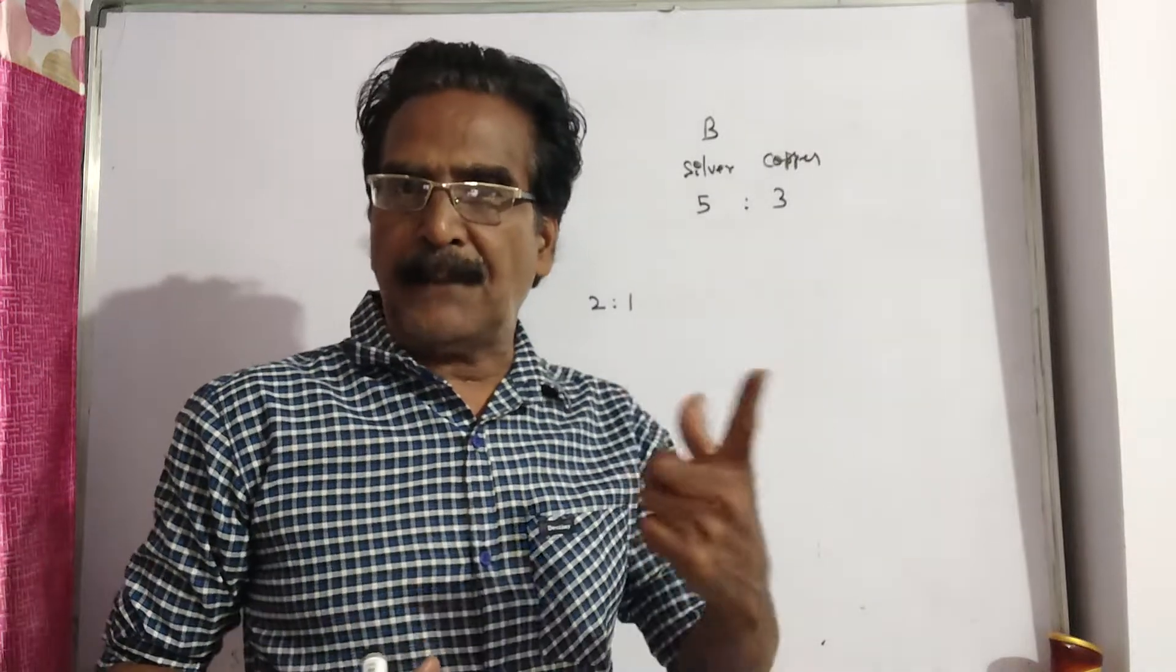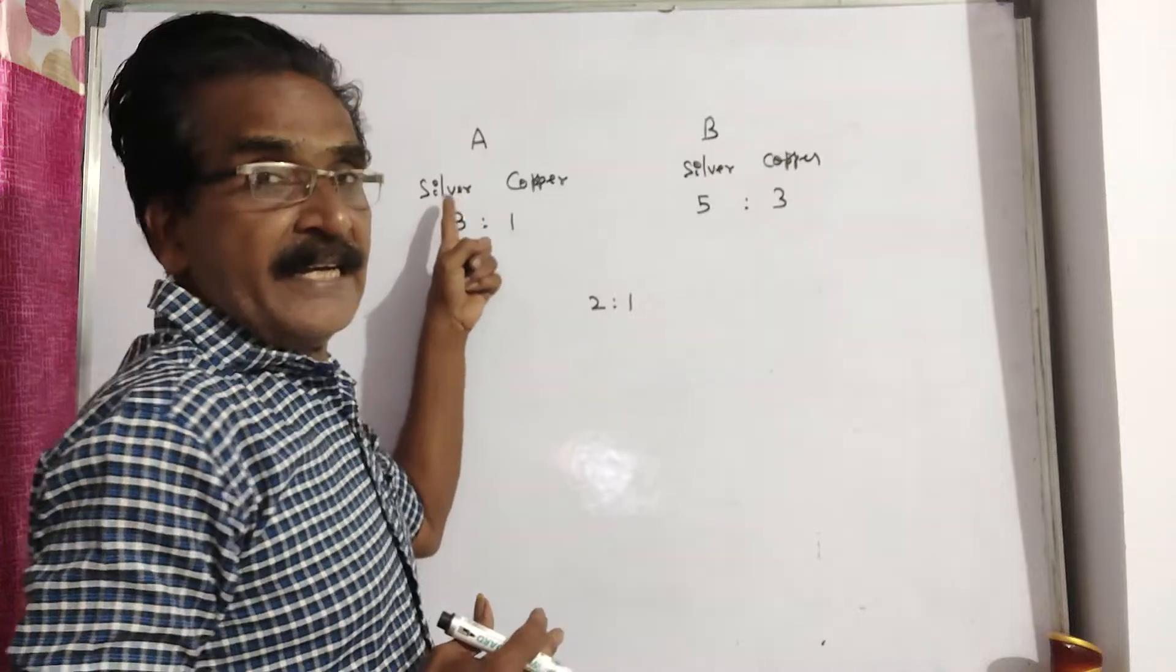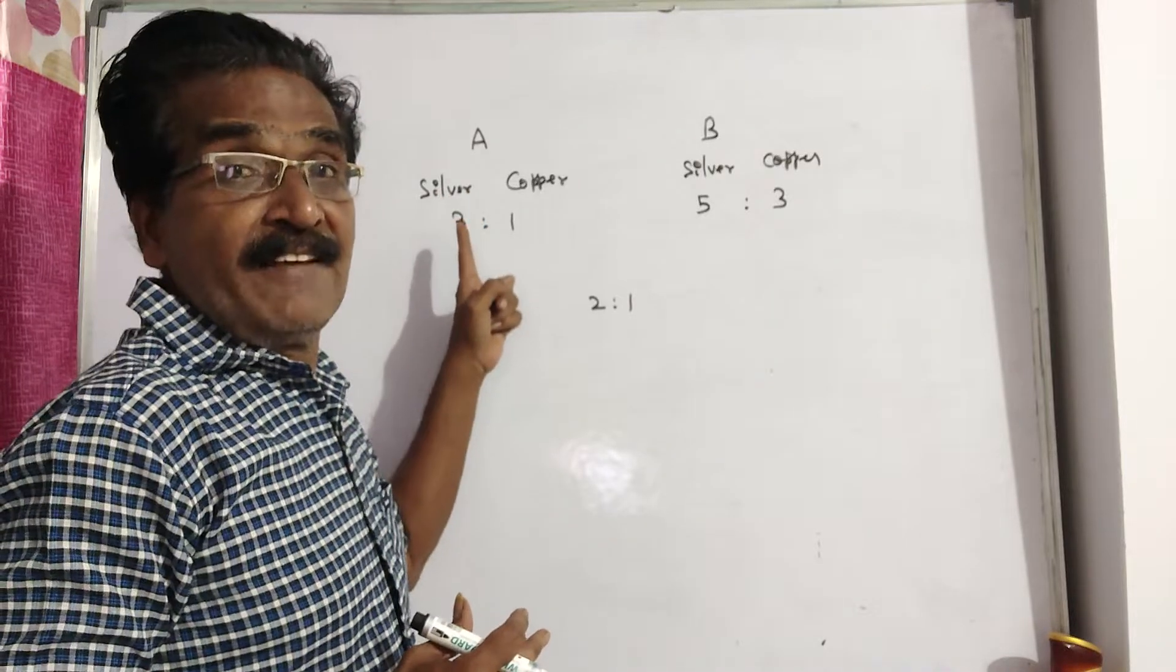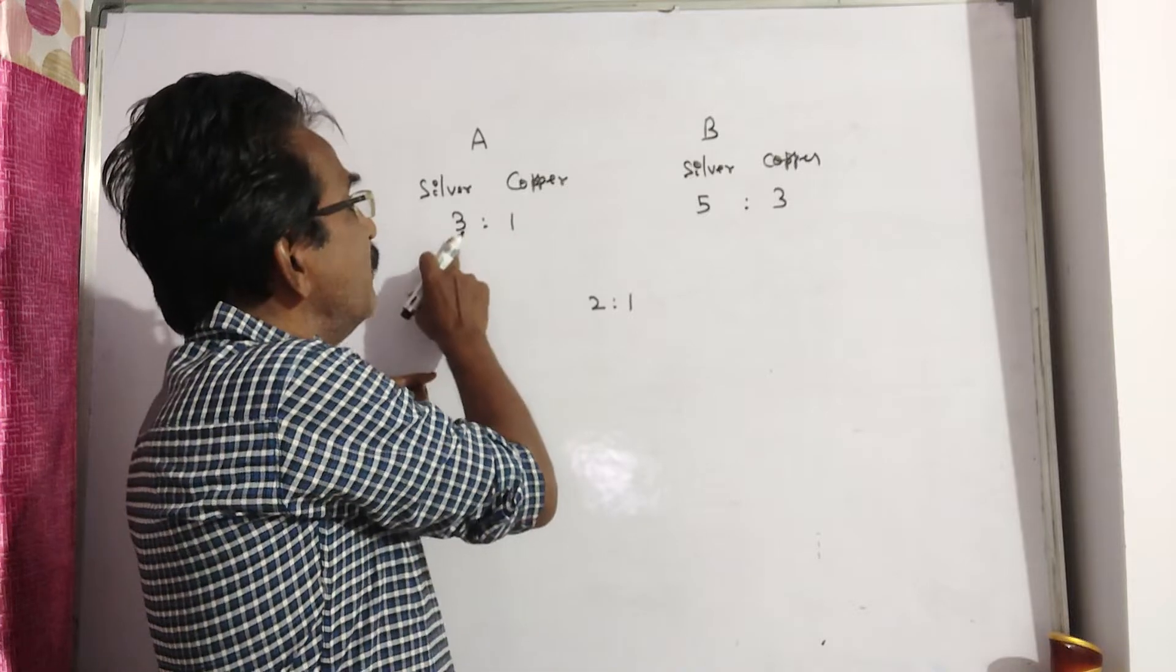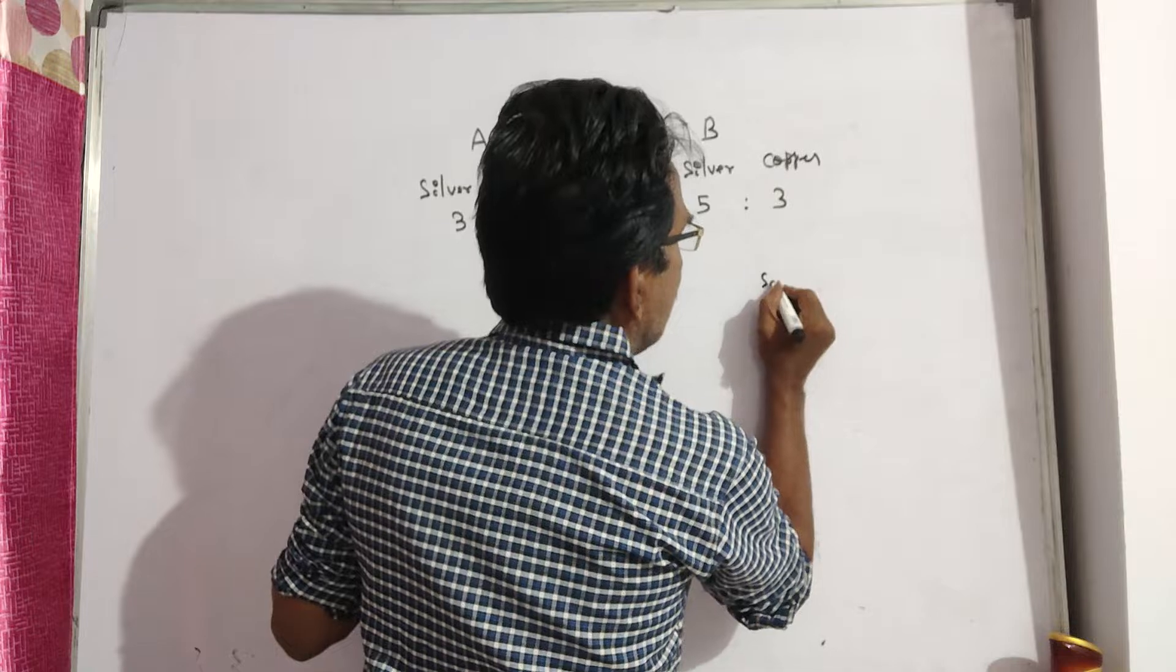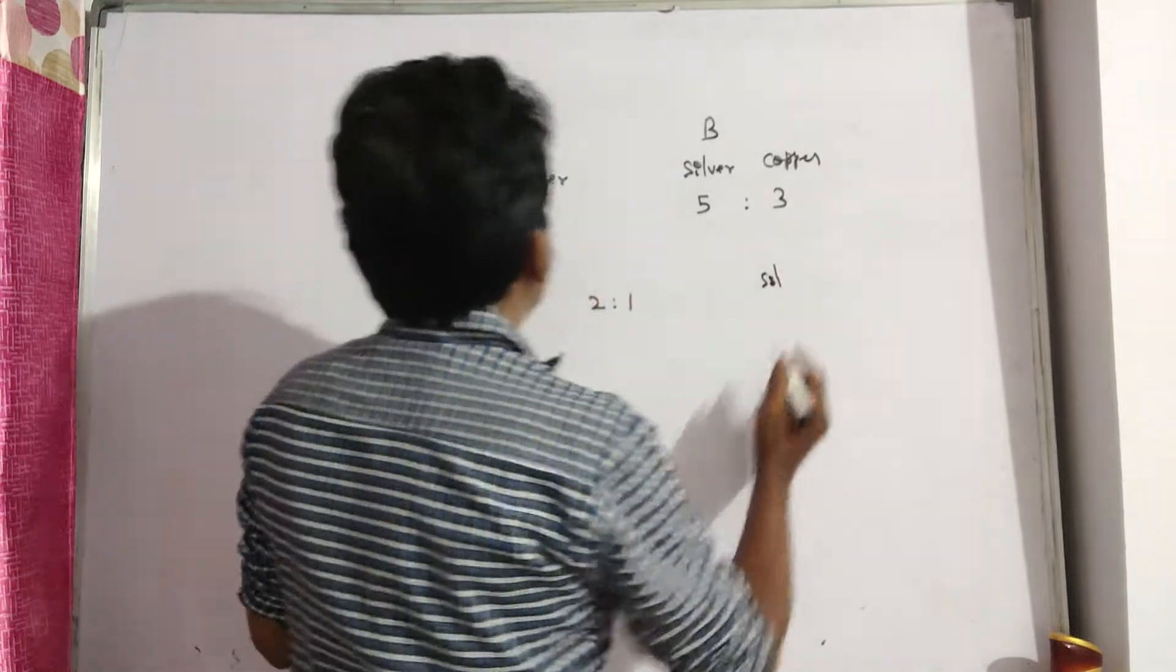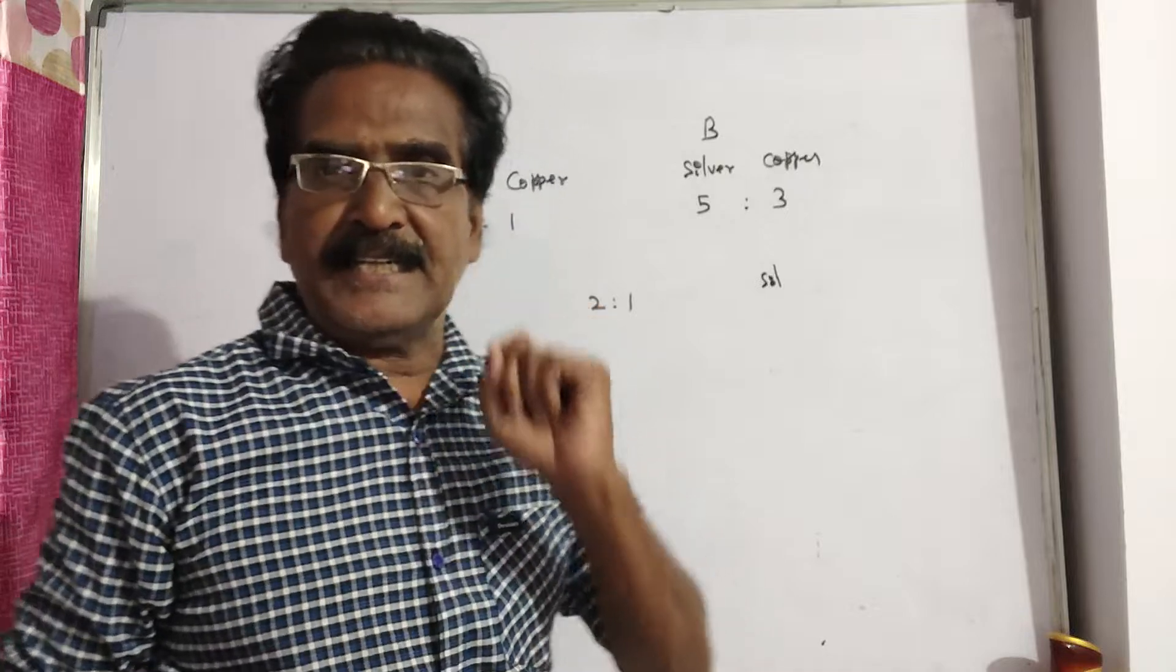See friends, this problem can be solved by applying rule of allegation. Here silver and copper are in the ratio 3 to 1, means silver is 3/4 and copper is 1/4. I am considering silver. You can consider either silver or copper to apply rule of allegation and get the required answer.